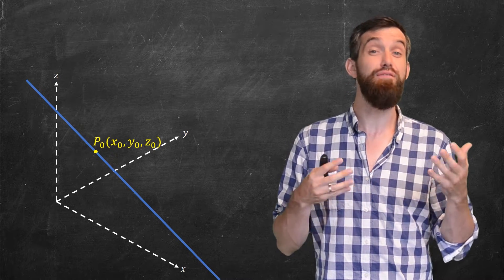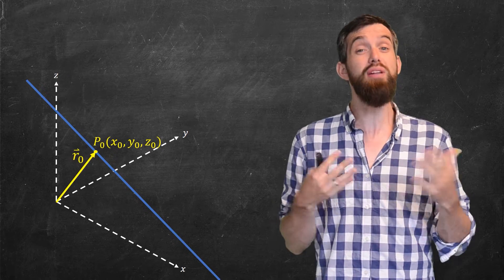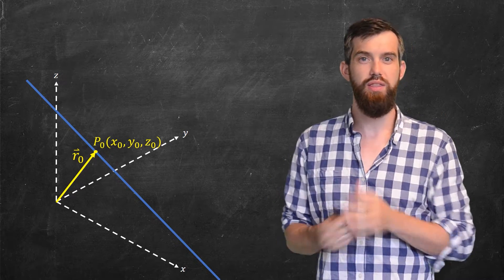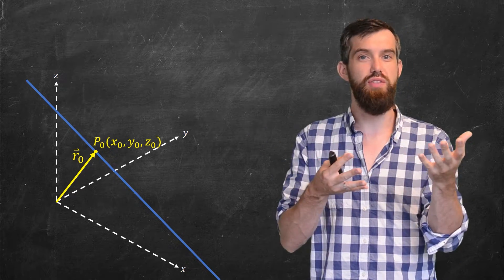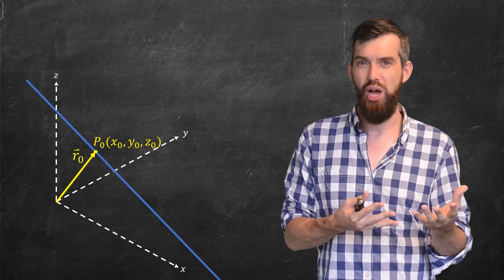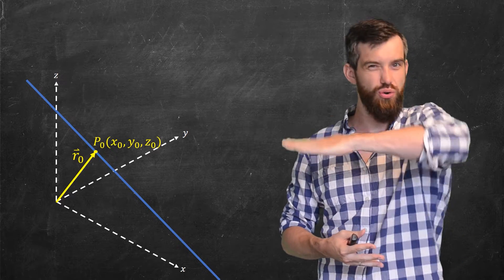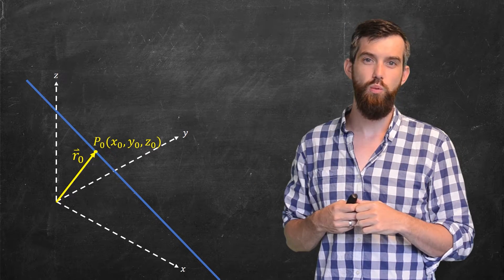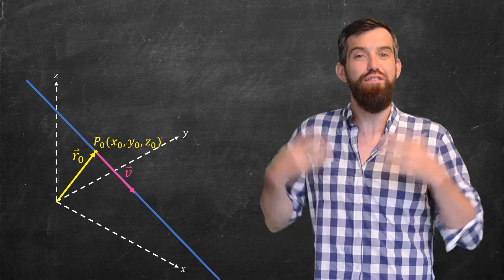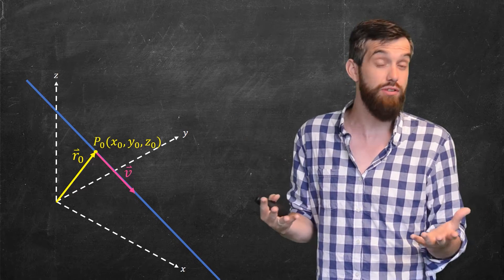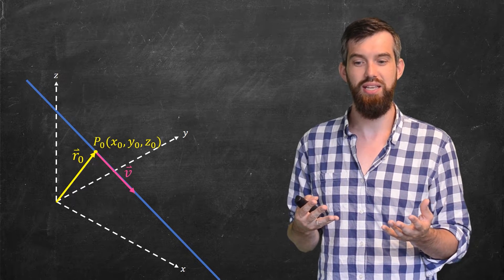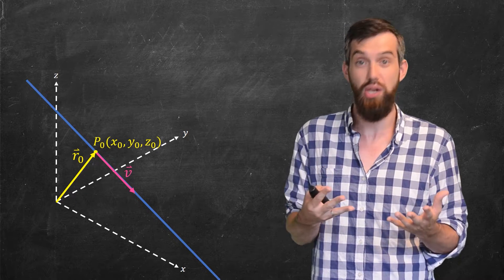I'm going to define a vector r0, which begins at the origin and has its tip at the point p0. This fixed point is analogous to the x0, y0 we saw before. But what's the analogy for the slope m — the way that the line tilts or orients itself in three dimensions? Instead of a single scalar, I'm going to give you a vector v: some nonzero vector that lies along the line and is completely parallel to it.